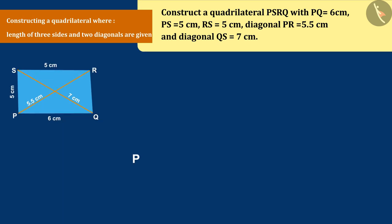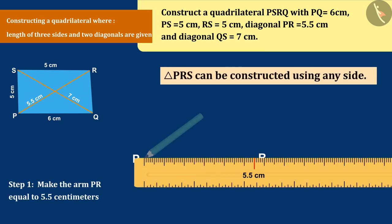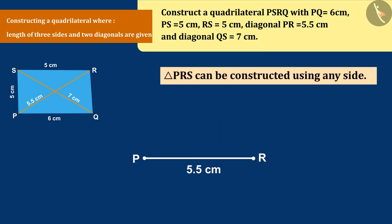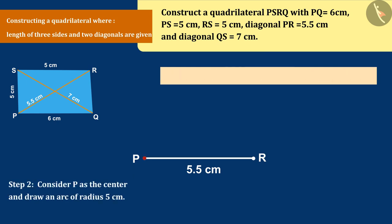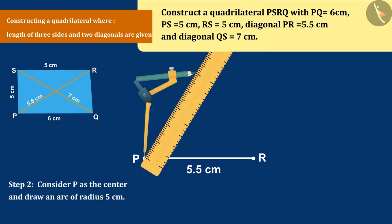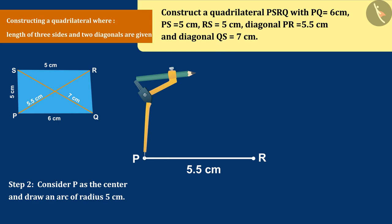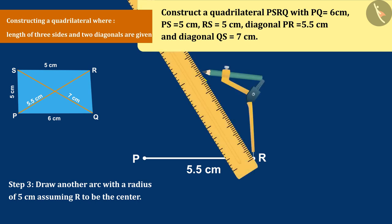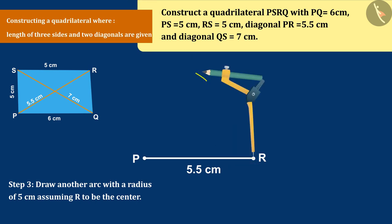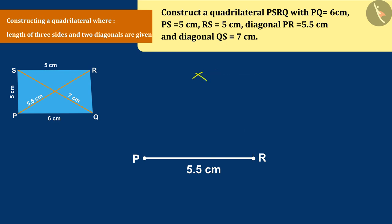First, make the arm PR equal to 5.5cm. Now consider P as the center and draw an arc of radius 5cm. Now draw another arc with a radius of 5cm assuming R to be the center. Name the intersection of both arcs as S.